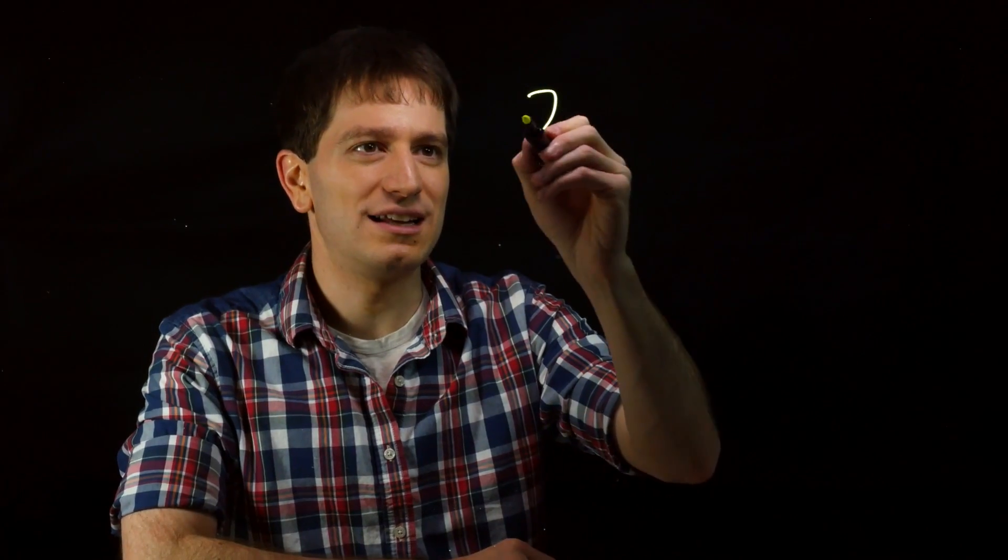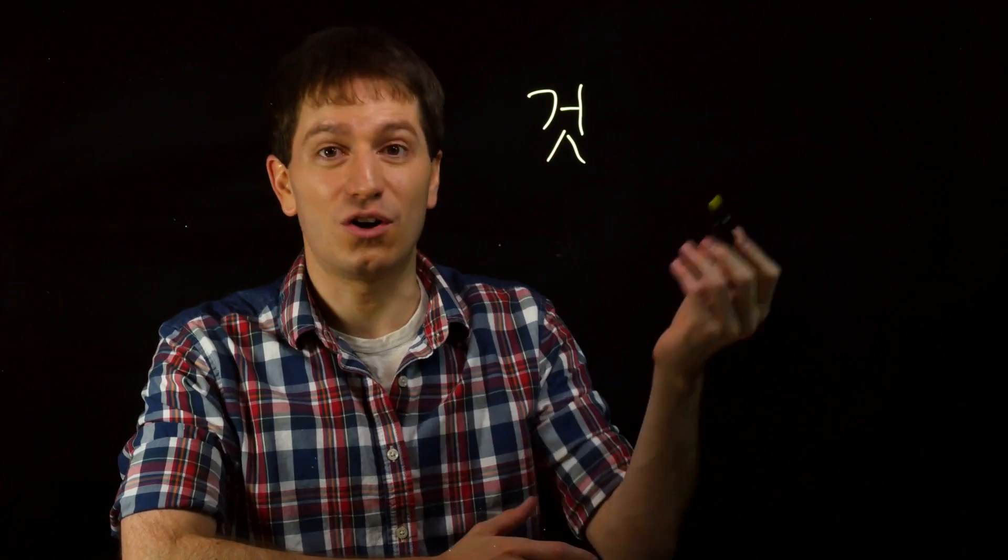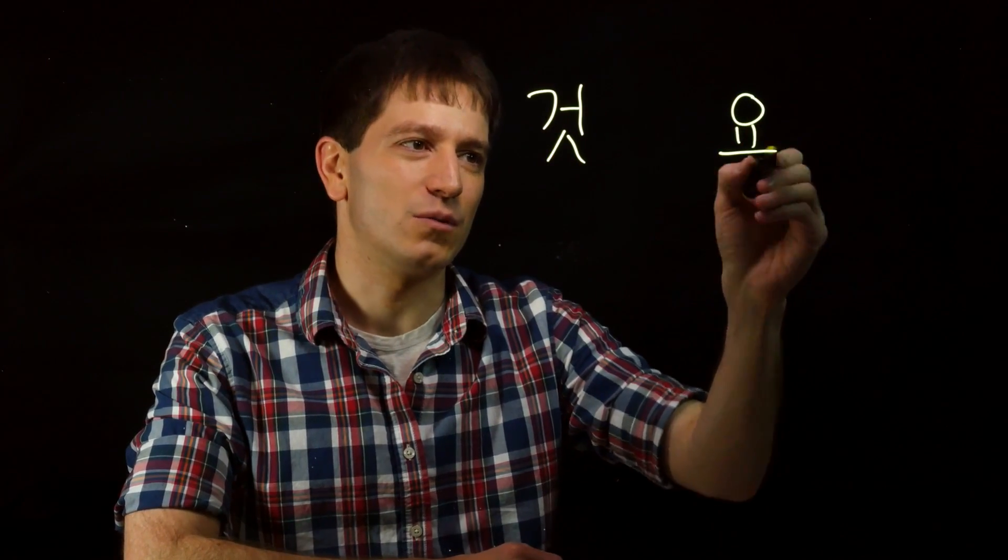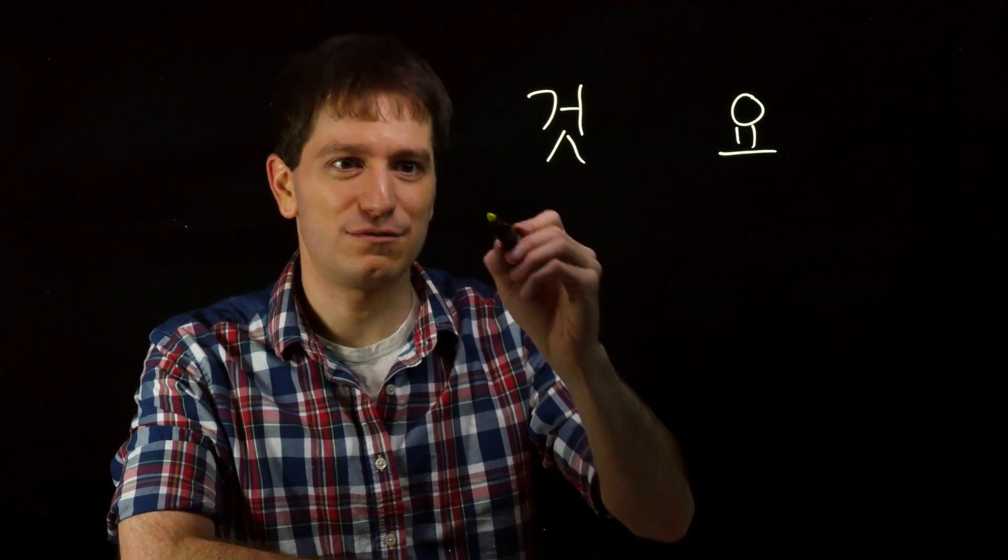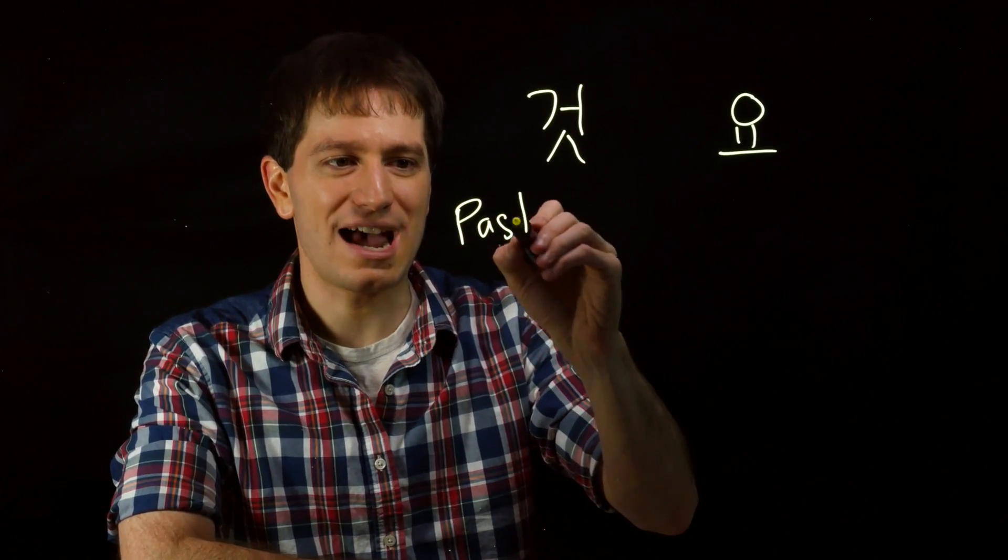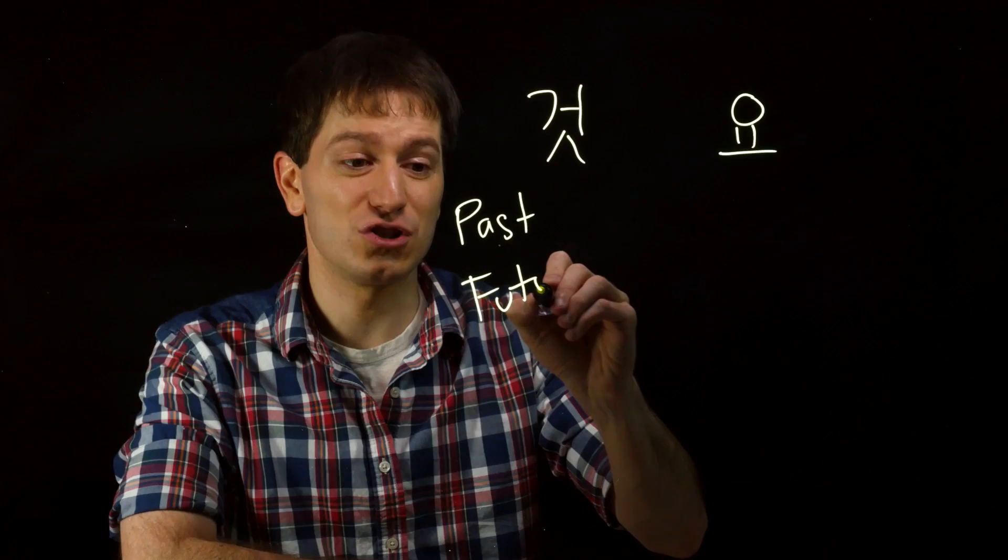This difference between the 는 거, or 는 거, and the regular 요 form, or regular present tense, extends past the present tense. In fact, it also goes into past tense and future tense.